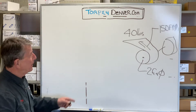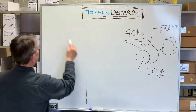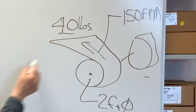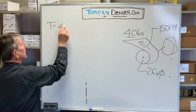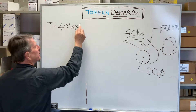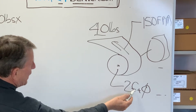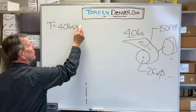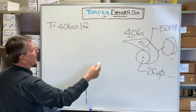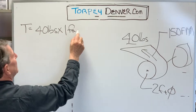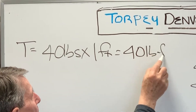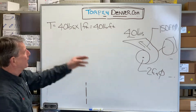First step is how much torque are we going to require? Torque equals the force of 40 pounds times the radius of the roll, which would be one foot — two feet divided by two equals one foot — giving us 40 pound-feet of torque required.